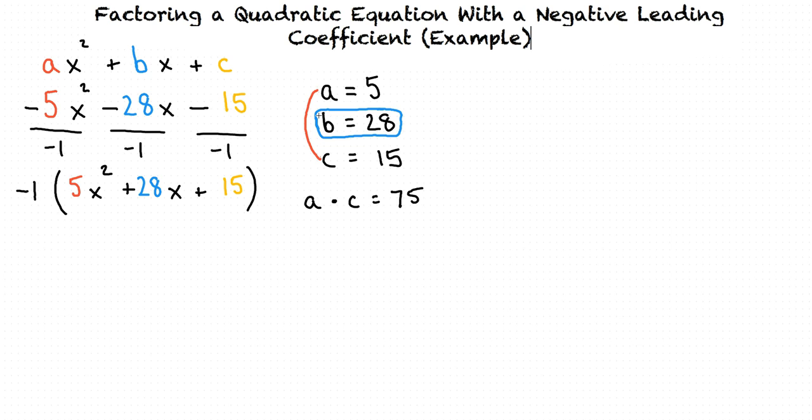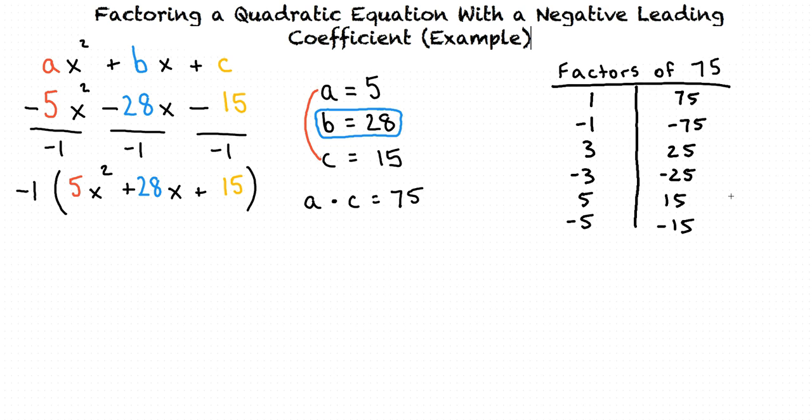In order to do this, the best way is to make a table with all the factors of 75. Here we can see all of the pairs of factors that when multiplied together equals 75. Now that we have this table, the next thing we need to do is figure out which pair of factors, when added together, also equals 28, which is our b term.